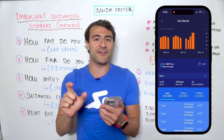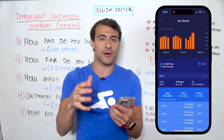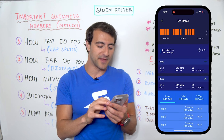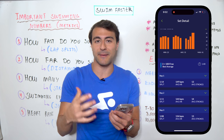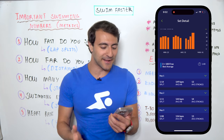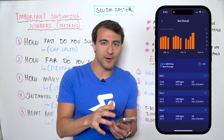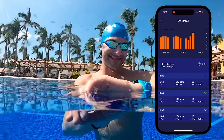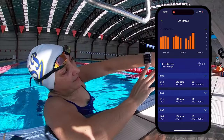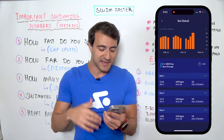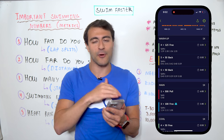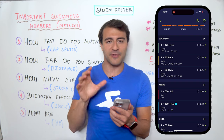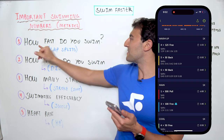Those splits answer the question: how fast do you swim? On the first 100 I swam 1 minute 14 seconds. I can also break it down into individual lap splits — the time for every 25 yards. This workout was written in the MySwimPro app and synced with my Apple Watch, so all splits were automatically measured for every set without any manual entry.